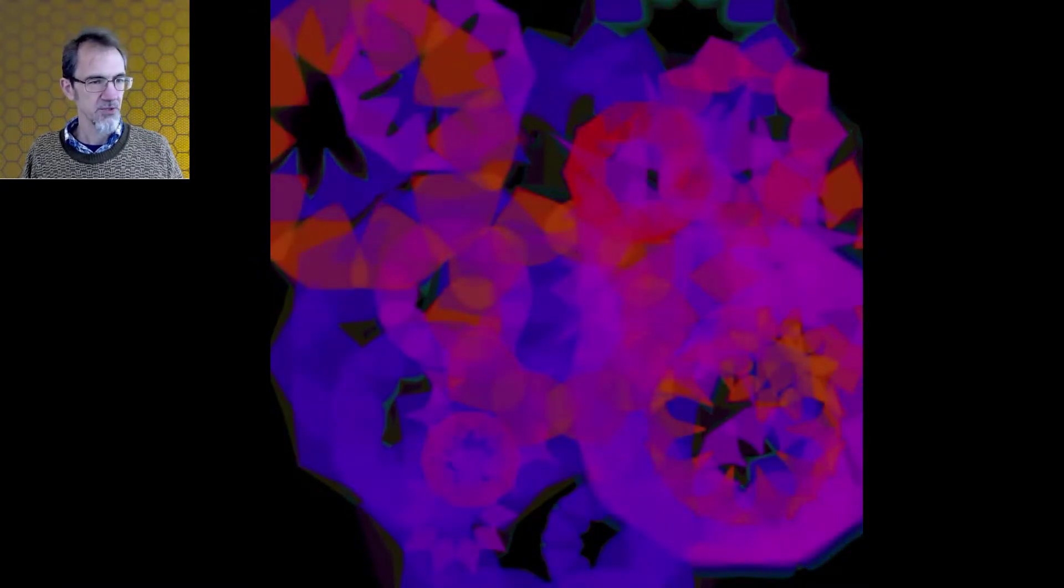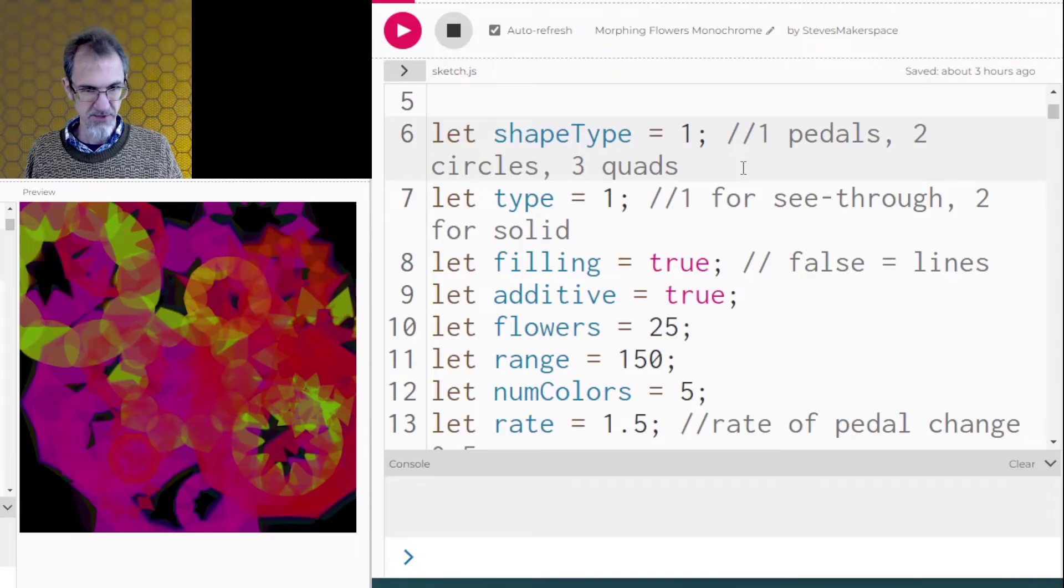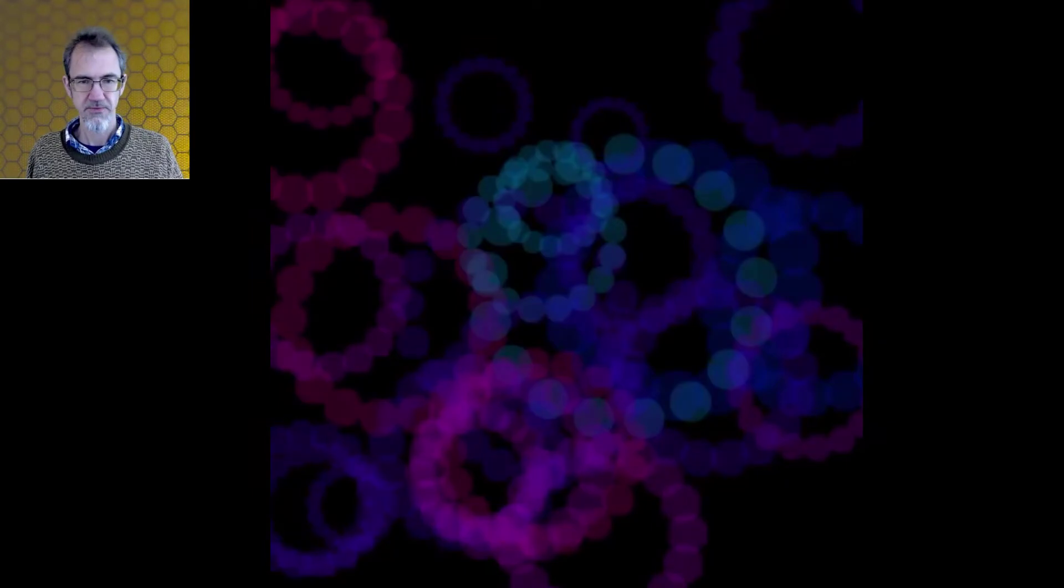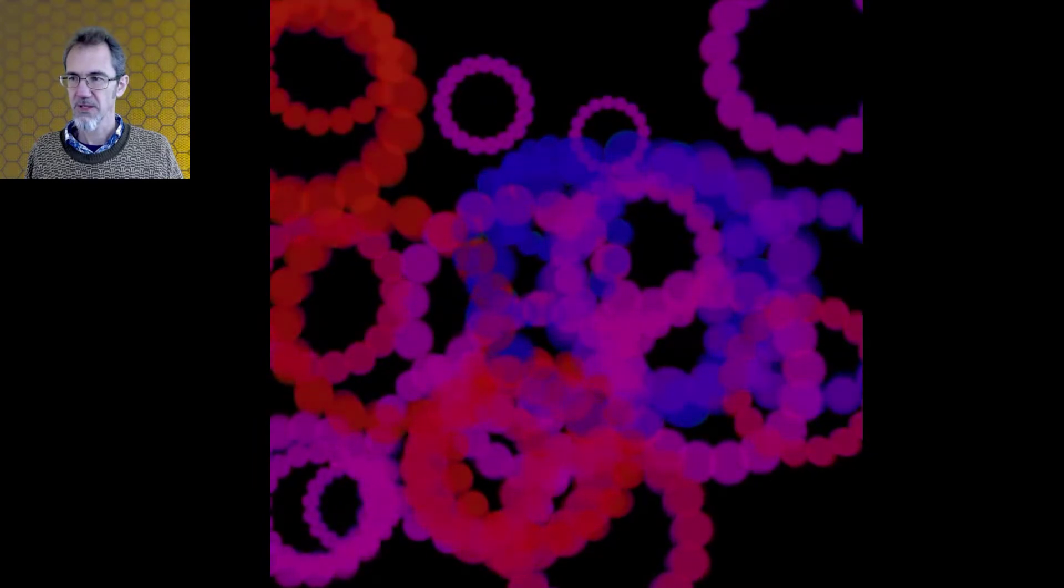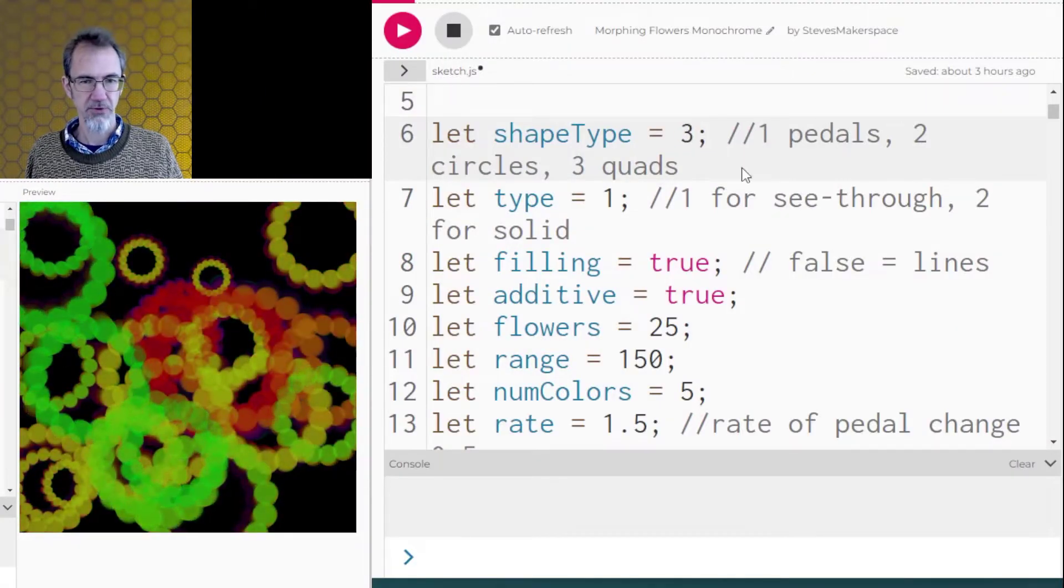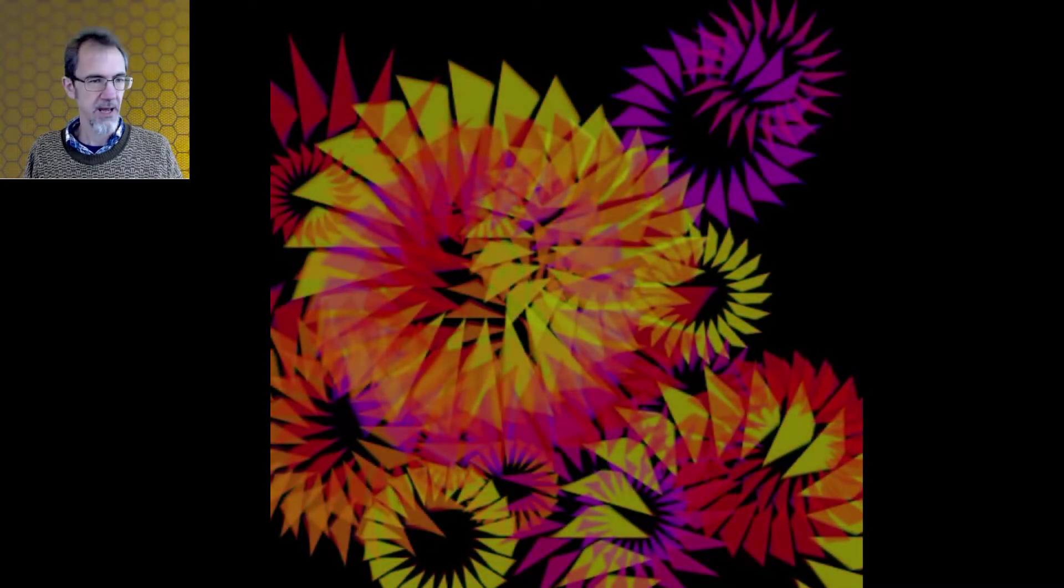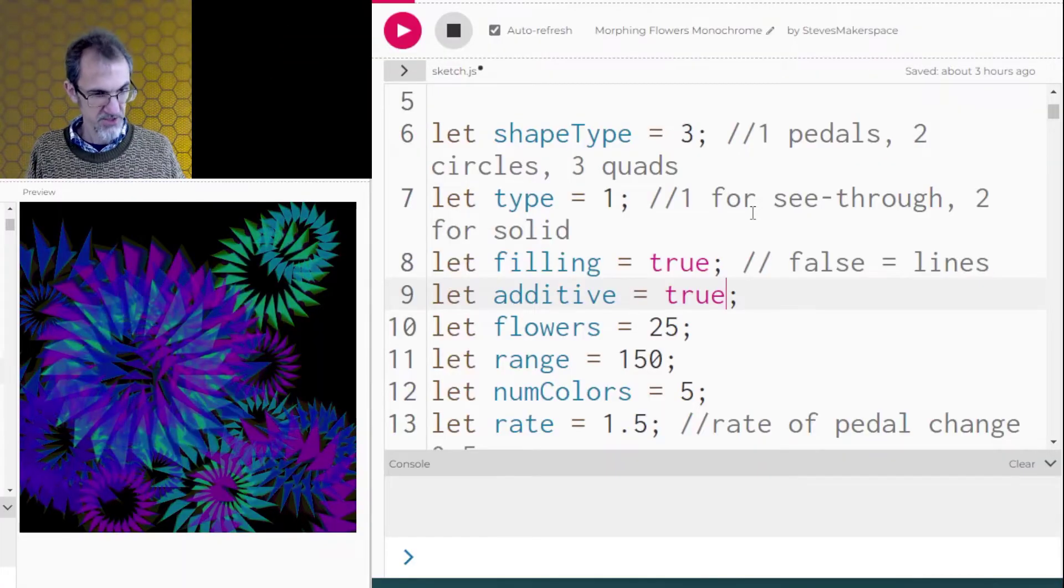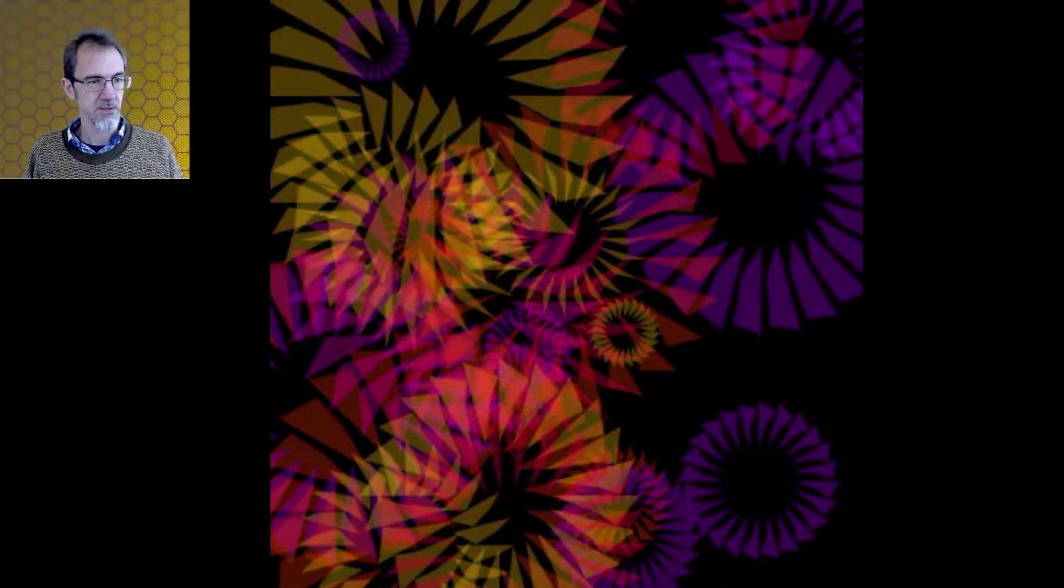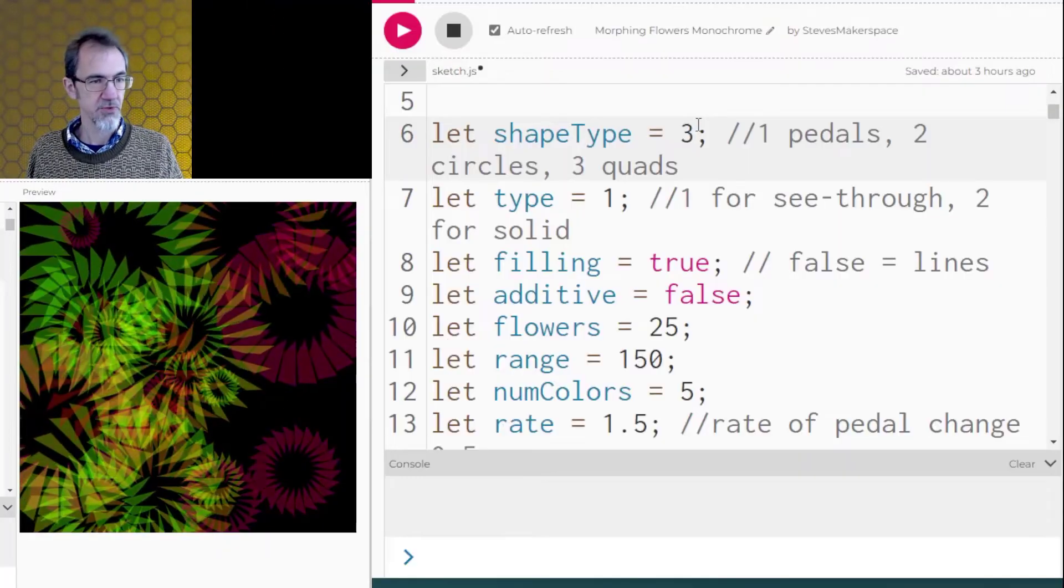And then there's this one. This one is called morphing flowers monochrome. I can do different shape types. So right now it's doing petals, but I can change this to circles. We get this. Or we can do quadrilateral shapes like so. Now this is additive at the moment. I can change this to additive as false. Now we get something like this.